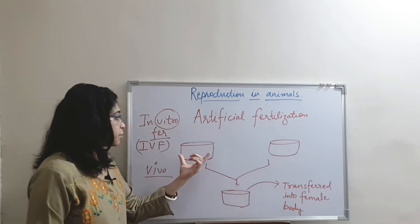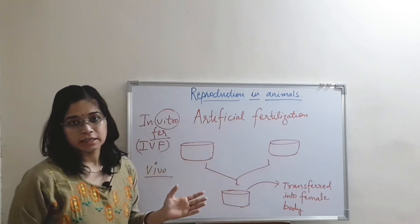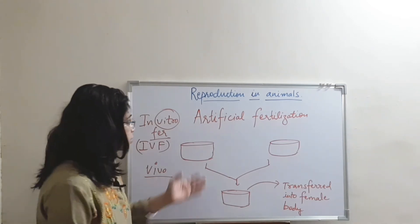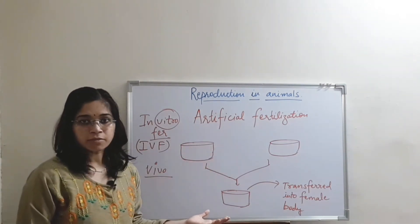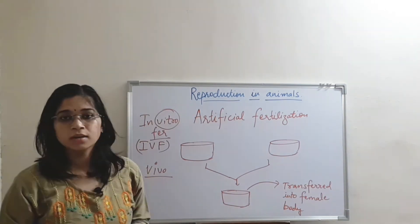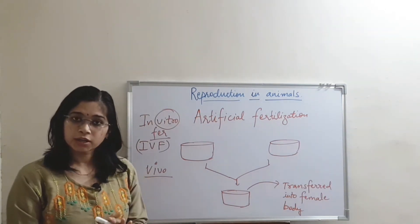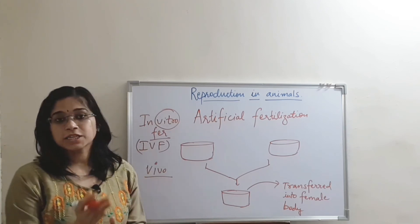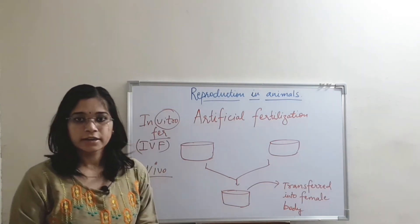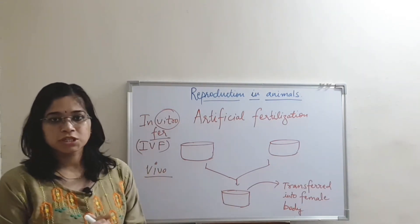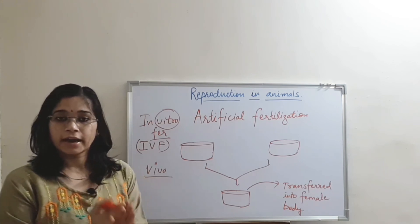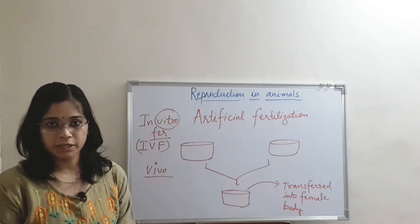In the IVF process, male and female gametes are taken outside the body and collected by doctors. Then both are fused together in a laboratory. After the fusion, the zygote is formed. After confirming it is growing in a normal way and it reaches the embryo stage, it is then transferred into the uterus of the female. After this, the normal procedure takes place — the growth of the fetus — and after 9 months, the birth of a child takes place.